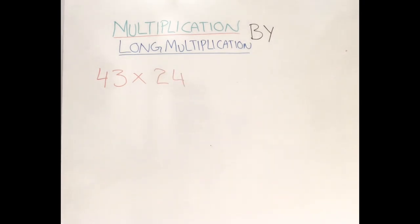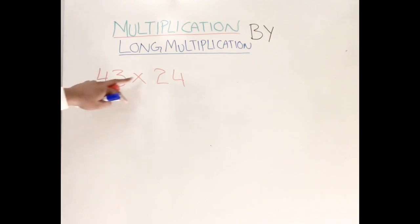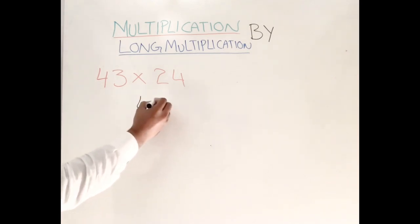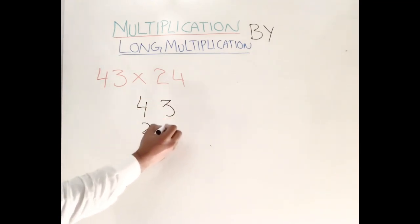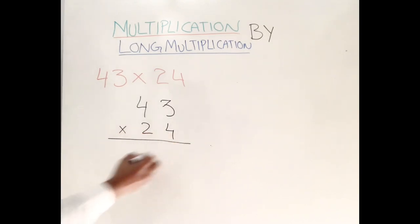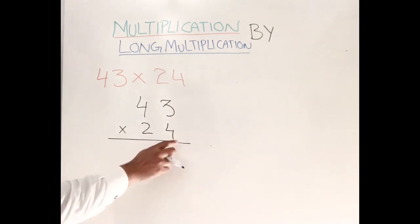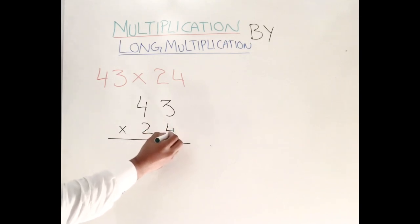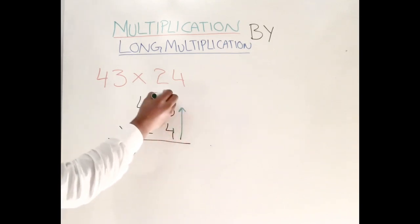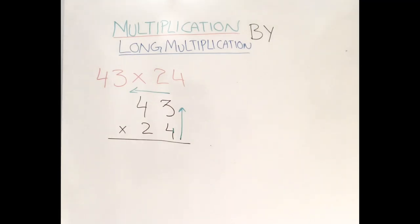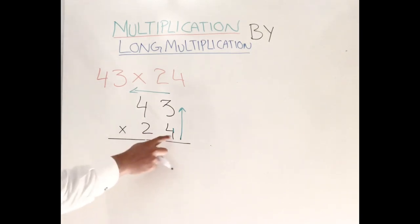Now let's look at double-digit numbers multiplied together. When both numbers are two digits, you can write either one on top — it doesn't matter. Write down 43 times 24. Again, the method starts from the unit numbers, going from right to left.